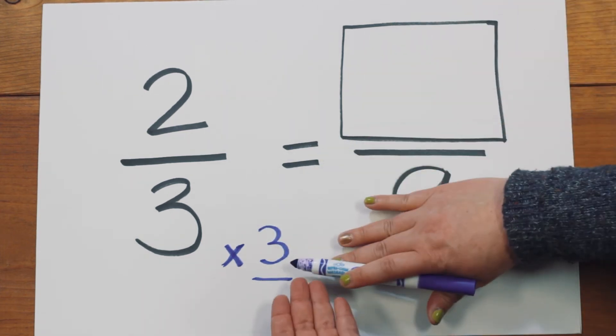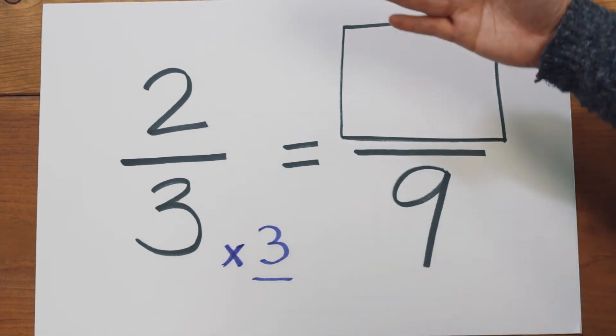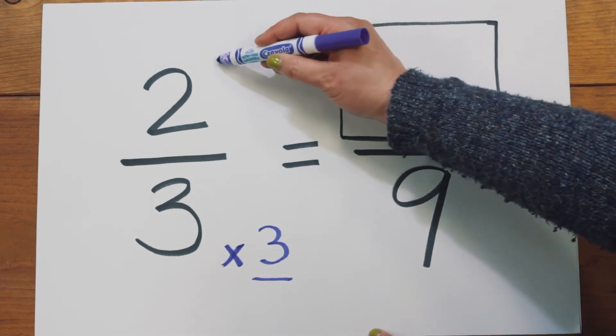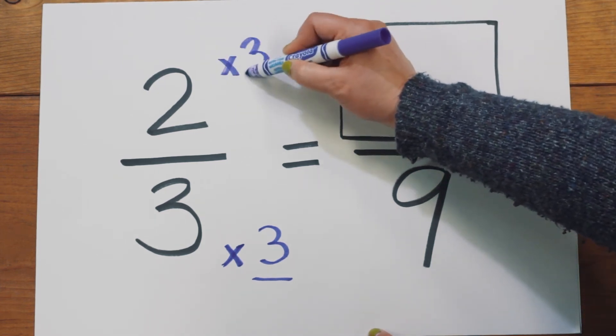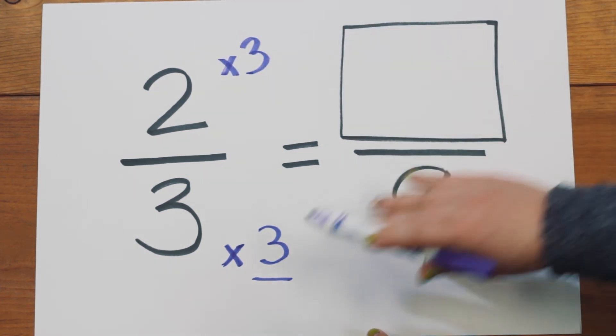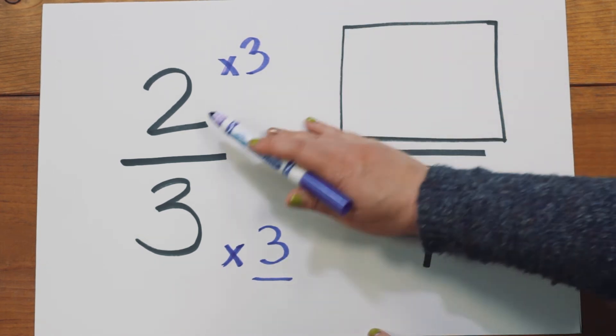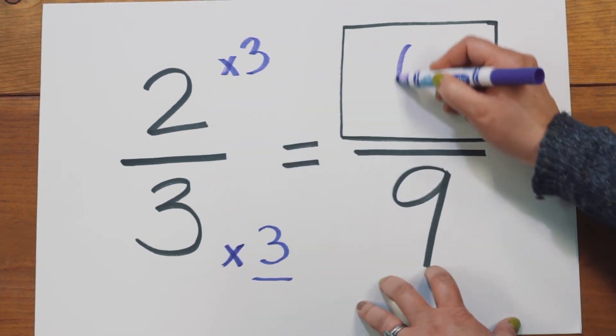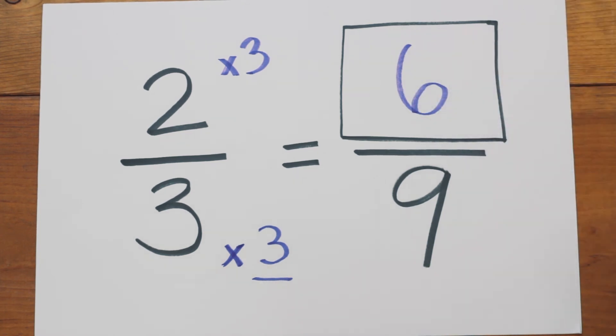And then whatever you do to the bottom, you do to the top. Exactly. So you're going to multiply this number by three as well. So whatever I did to the bottom, I'm doing to the top. And two times three is six. My answer is six ninths. It's as easy as that.